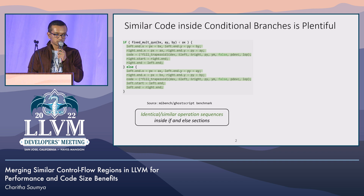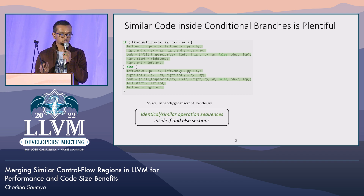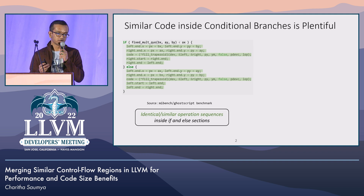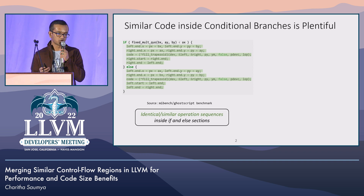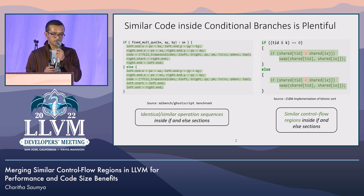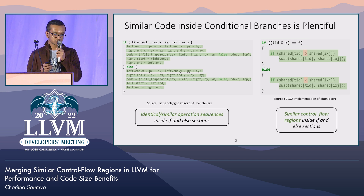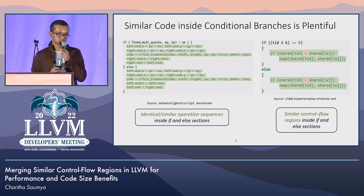Conditional branches with similar computations are quite common in real-world code. This code similarity can come in different varieties. For example, you can have straight-line code with similar or identical computations in the if and else section of a conditional branch, as shown in this example. Also, you can have control flow regions inside the if and else sections with similar computations, as shown in the second example on the right.